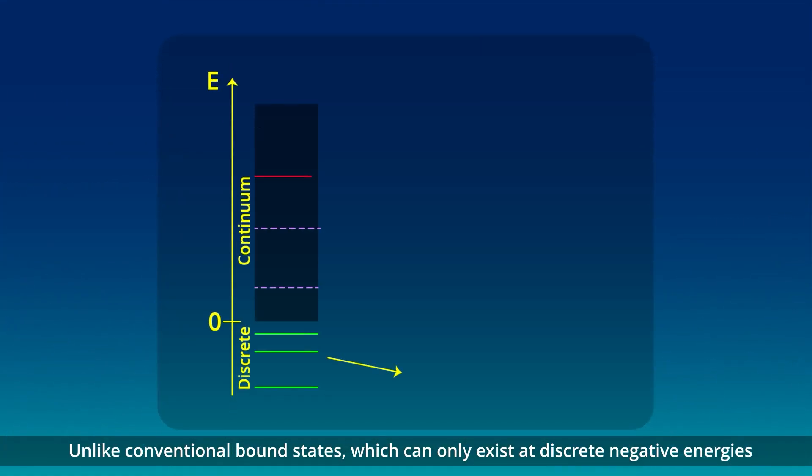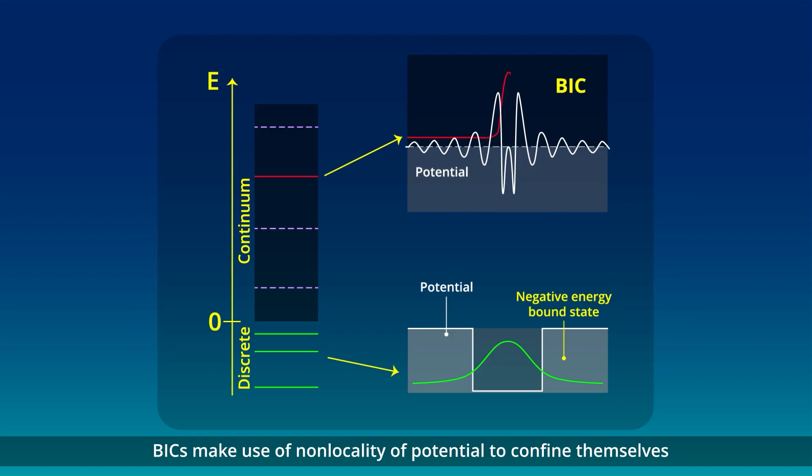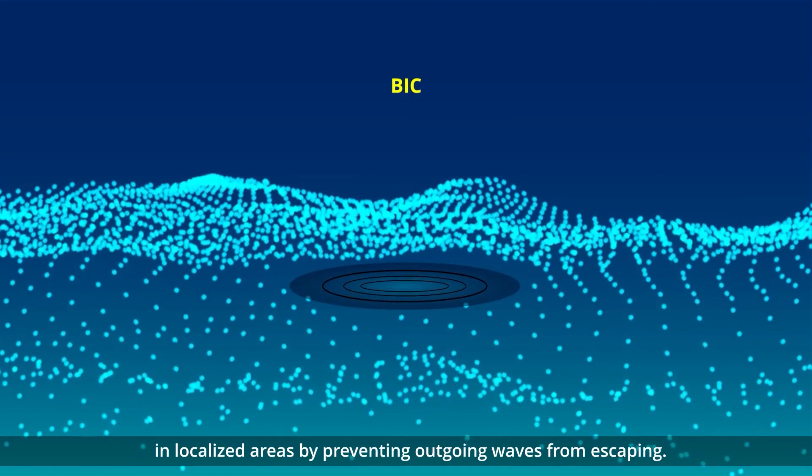Unlike conventional bound states, which can only exist at discrete negative energies below continuum spectra of scattering states with positive energies, BICs make use of non-locality of potential to confine themselves in localized areas by preventing outgoing waves from escaping.